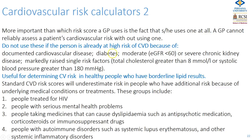You don't need to use risk calculators in patients with already pre-existing disease such as diabetes, cardiovascular disease, moderate or severe chronic renal impairment, or markedly raised single risk factors like total cholesterol more than 8 or systolic pressure more than 180. In other patients with hypertension, these calculators can be used to determine overall risk.